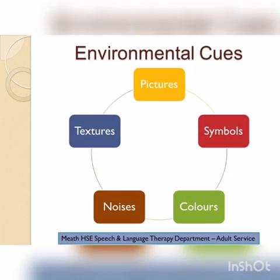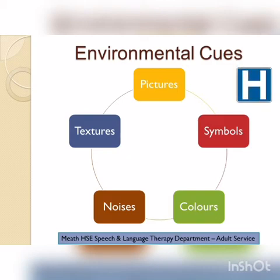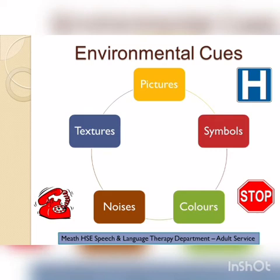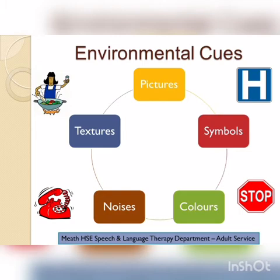Environmental cues: the world around us has various different pictures, symbols, colours, noises and textures that all help us to function in our daily routines. For example, the H sign for a hospital, or the red light for stop, the sound of the phone ringing to let us know someone is trying to call us, or indeed the smell of the dinner cooking so we know it is near dinner time. There are so many examples that we could think of in our environment.